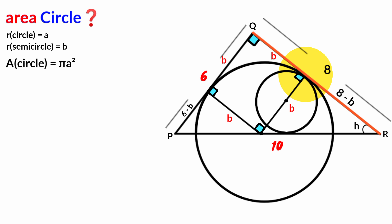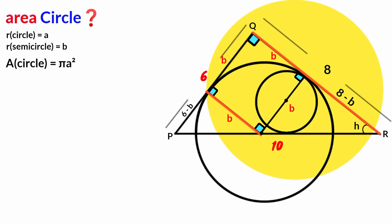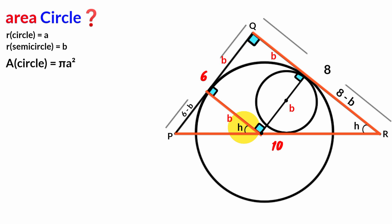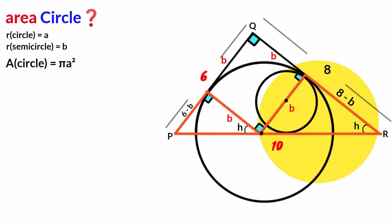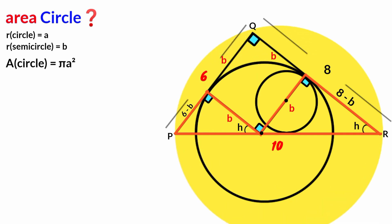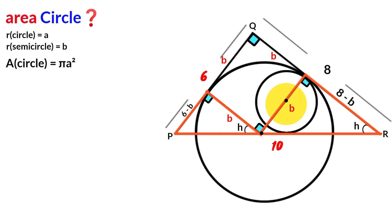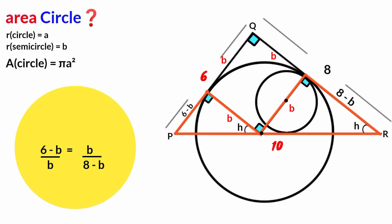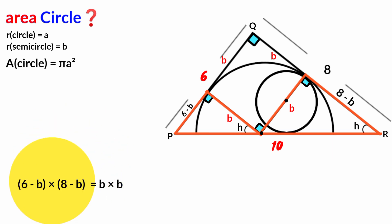Assume the size of angle H. Side QR is perpendicular to one side, and this line is also perpendicular to the same side, making the two lines parallel. Since this side makes angle H with one line, the angle between these two lines must also be H. We have two right-angle triangles each containing angle H, which makes the two triangles similar. Taking the ratio of corresponding sides: (6 − B) / B = B / (8 − B).